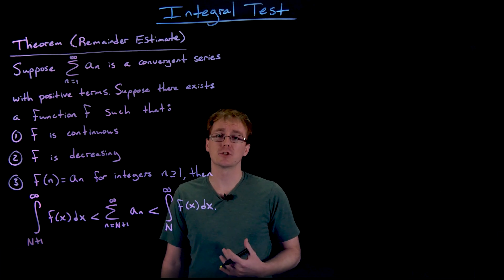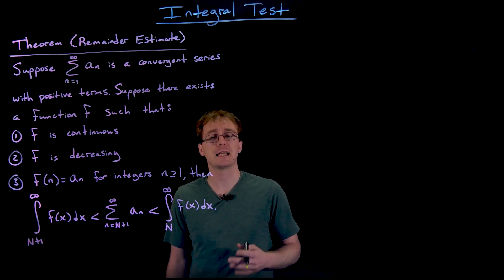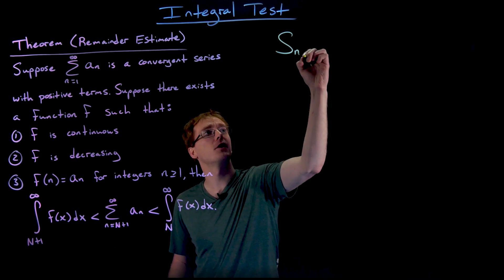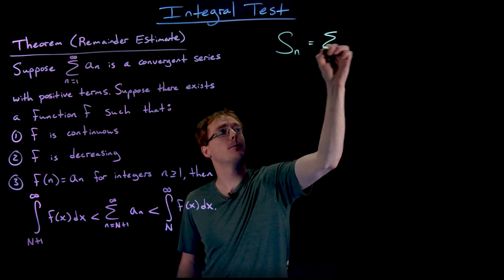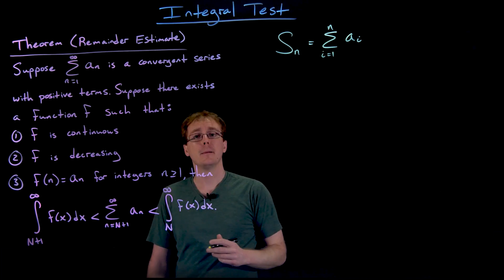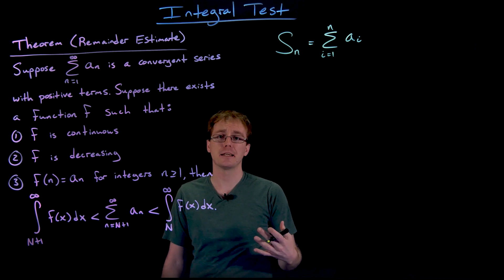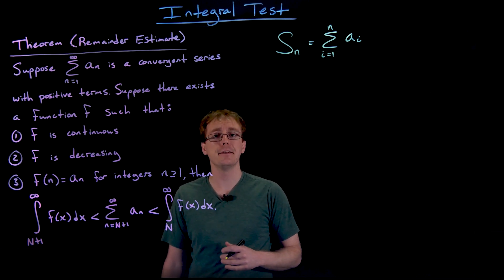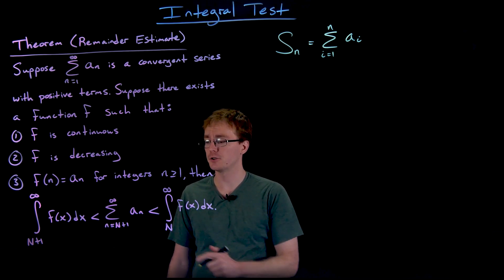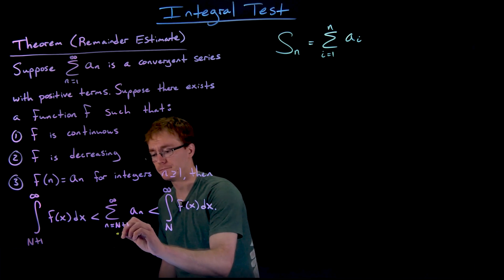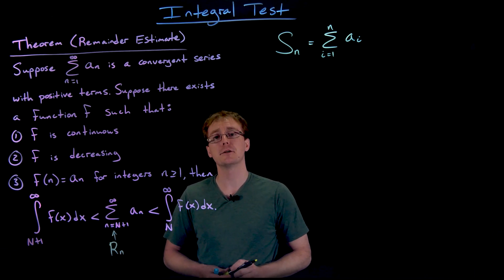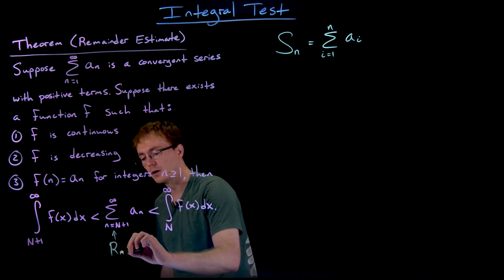The way we actually approximate the sum of a series is by using a partial sum — adding up to some number of terms in our series. In general, we'll denote a partial sum using s sub n, which will be the sum of our series starting at i equals 1 and going up to n. So this is going to be a1 plus a2 plus a3 up to a_n. There will be more terms left over not included in this partial sum, and that is what we refer to as the remainder, denoted r sub n.